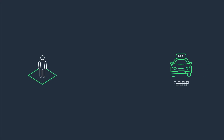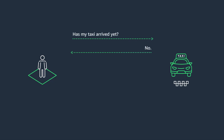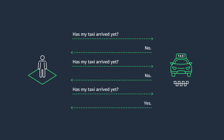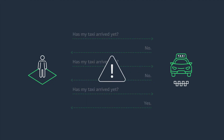If I have ordered a taxi and am waiting for it to arrive, in a traditional architecture I would need to query my taxi booking microservice every few seconds to ask: has my taxi arrived yet? This design pattern is not most suitable when dealing with events like this. It generates a significant amount of additional requests, and also means that we will only find out that the taxi has arrived after we ask again, not when it actually arrives.